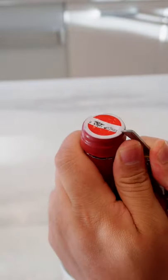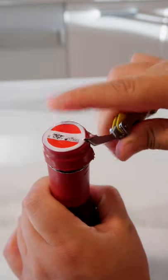Cut the foil under the lip of the bottle then make a vertical slice. This helps remove the foil easier.